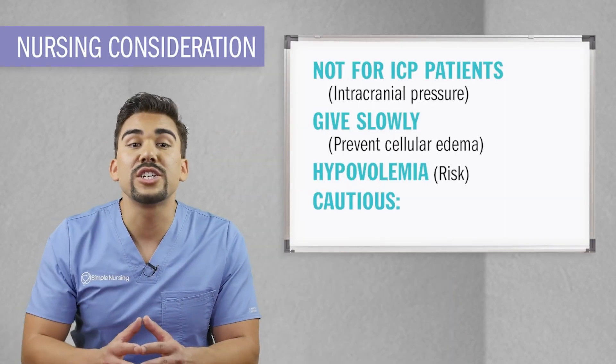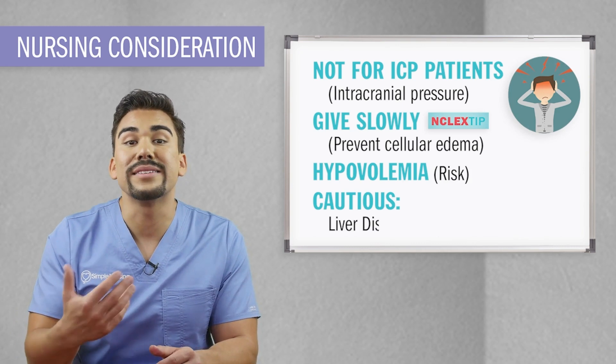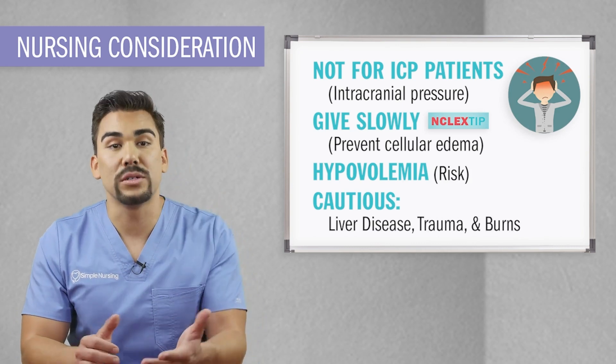Excessive infusions of hypotonic solutions can lead to fluid depletion inside the blood vessels — a condition called hypovolemia, basically low fluid in the body. Signs and symptoms of hypovolemia include tachycardia, which is usually one of the first signs, decreased blood pressure, cellular edema, and cell damage. Also be cautious with diagnoses like liver disease, trauma, and burns. To wrap up: no hypotonics for ICP patients, infuse very slowly, and watch for signs and symptoms of hypovolemia.